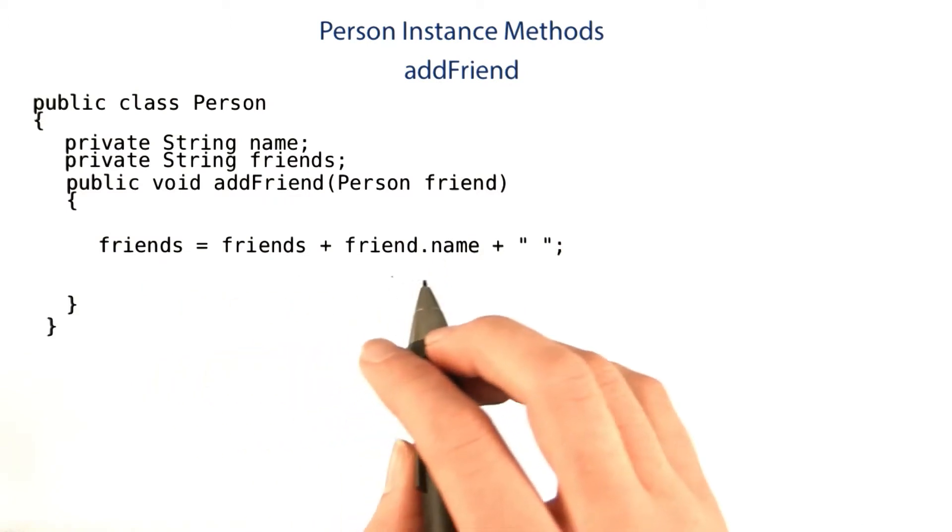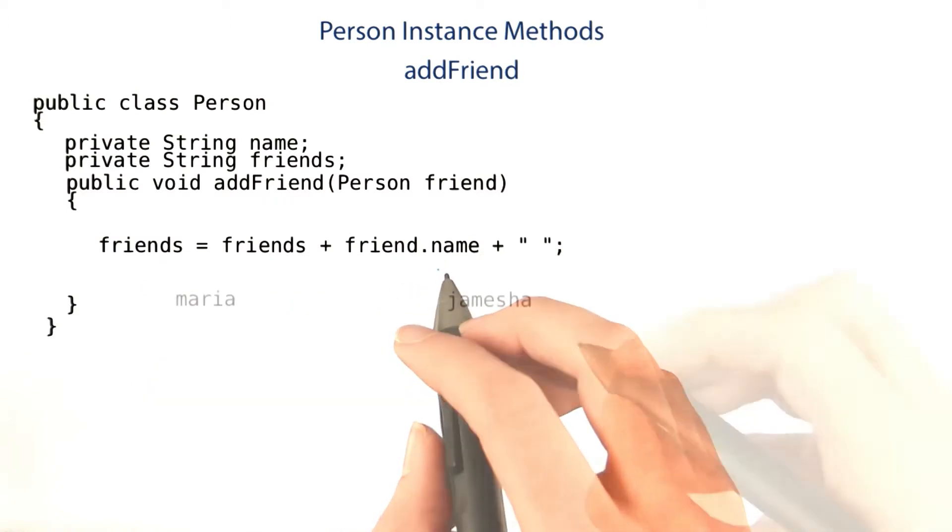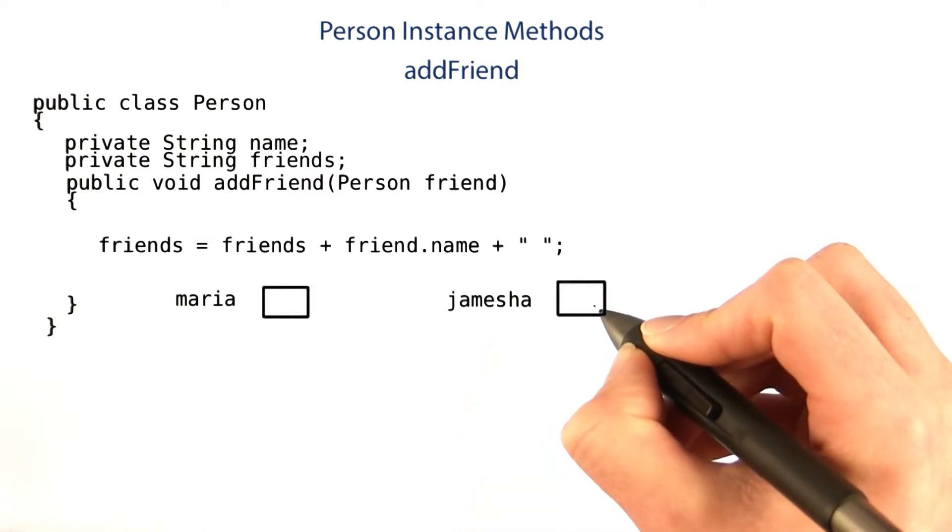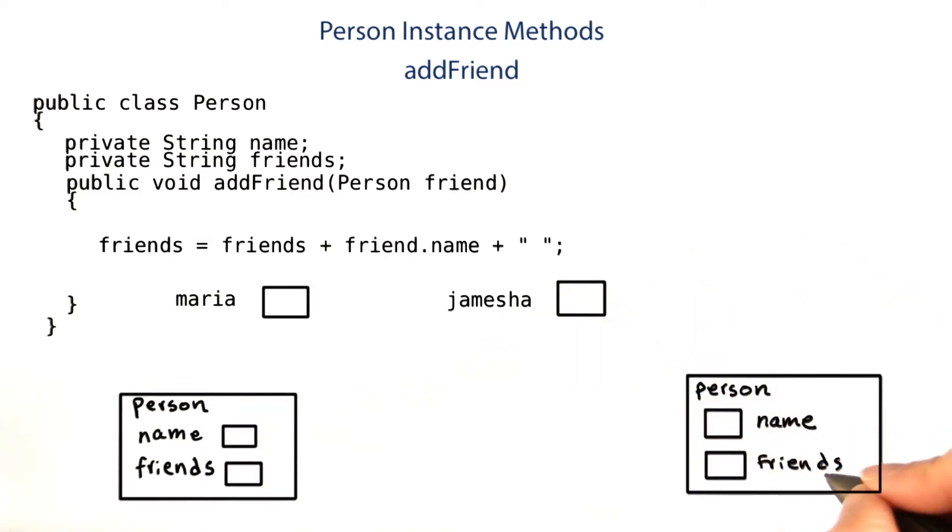There are some subtleties to how this method works, so let's go through an example. Let's say we have two variables, one for Maria and one for Jameesha. Each of those should contain a person object with a name and friends.